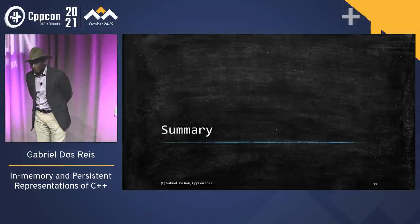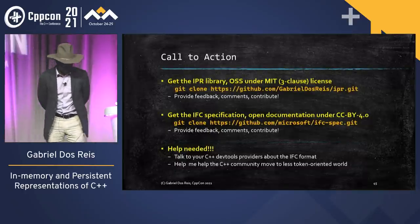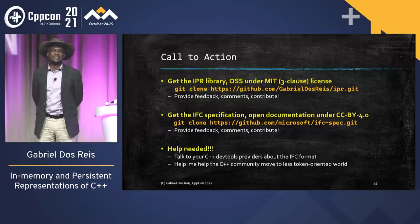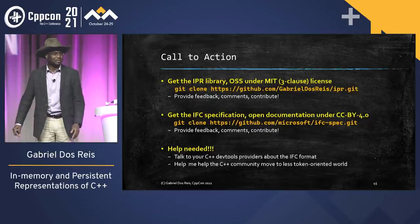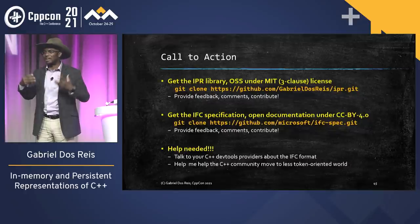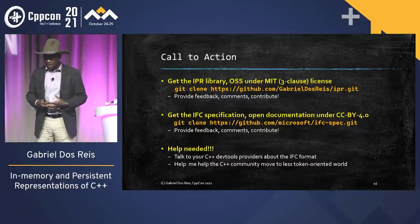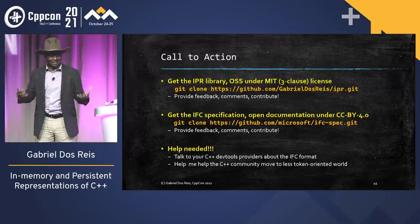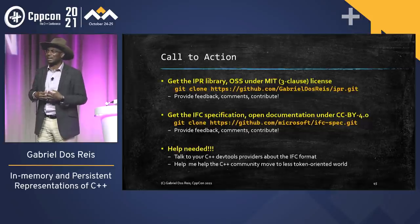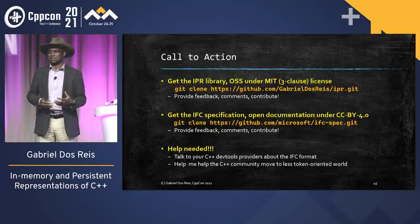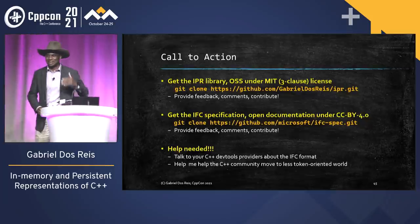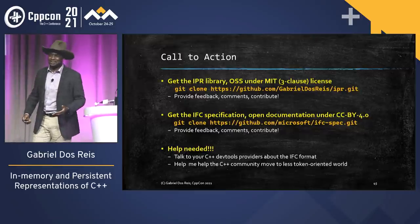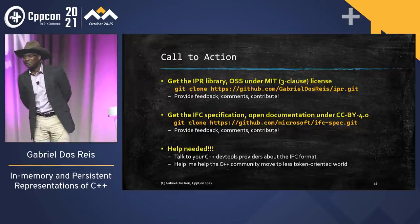In summary, what I'm asking of you: please download the IPR library — it's open source, MIT license, do whatever you want with it, but please try it and give feedback, file bug reports. And similarly, clone the IFC specification. If there are things you don't like, please open issues and let's have the conversation. Help me move these things to a better place that we are all happy with. I really need your help to connect to the other compilers and build tools for the community.